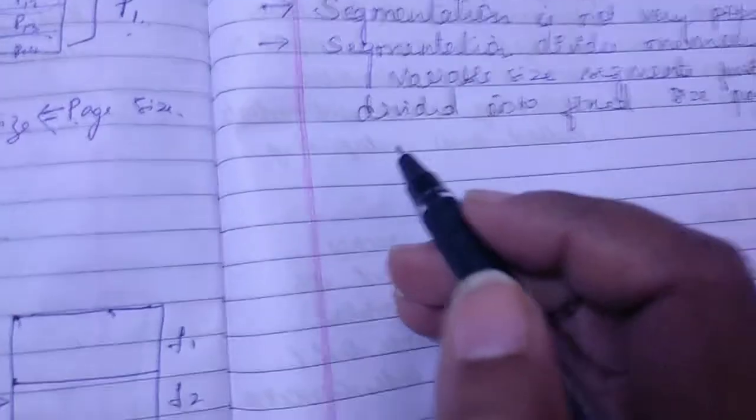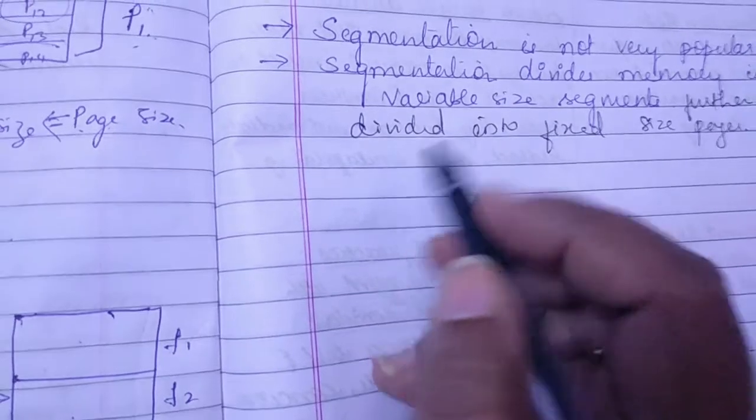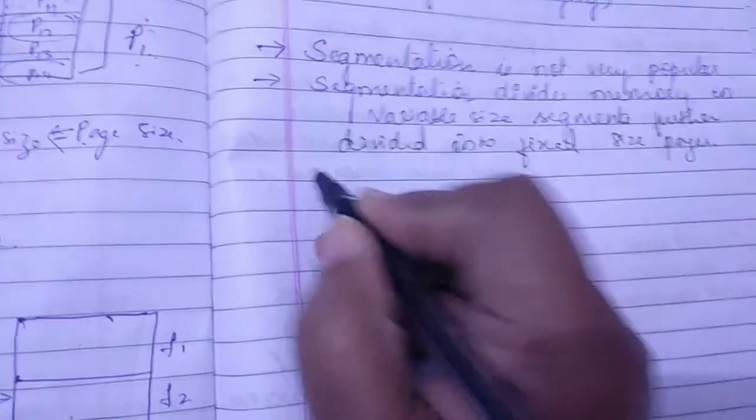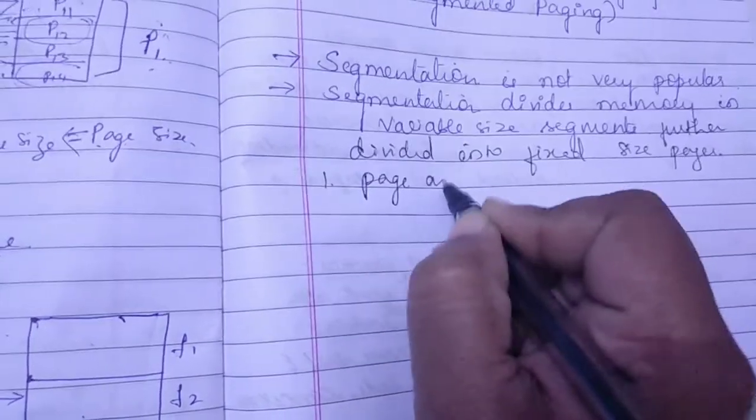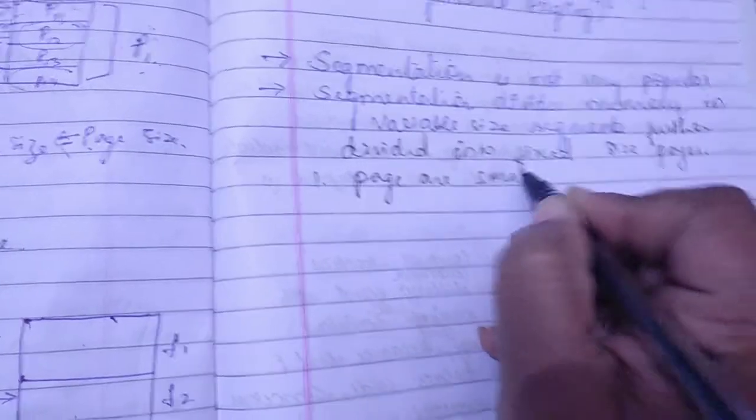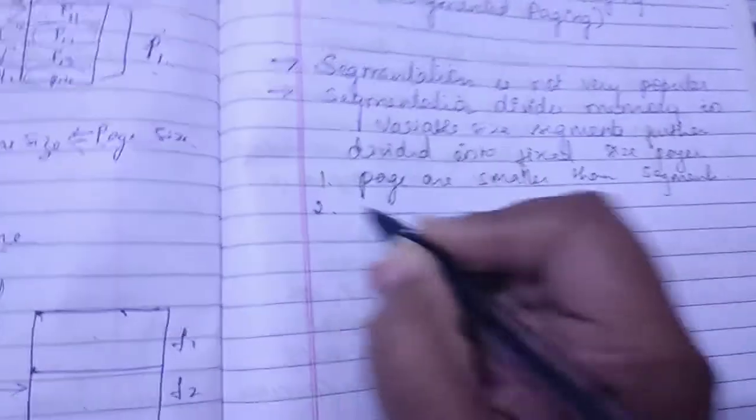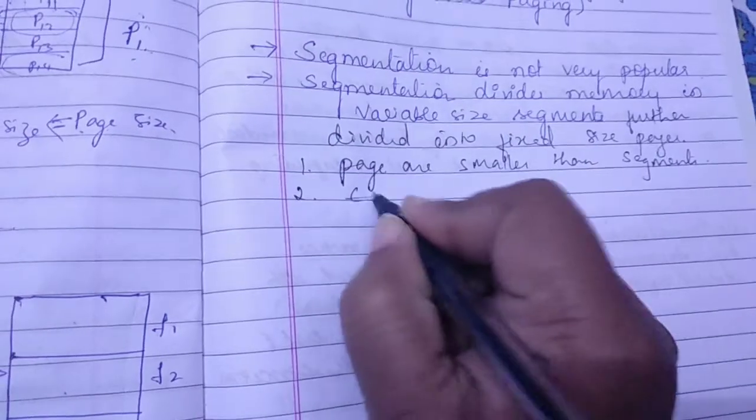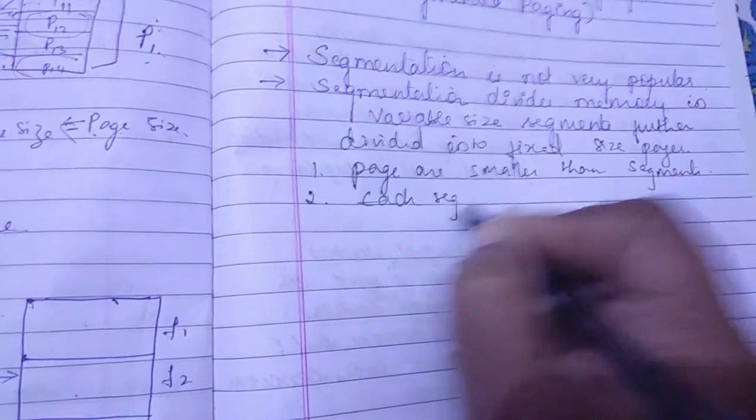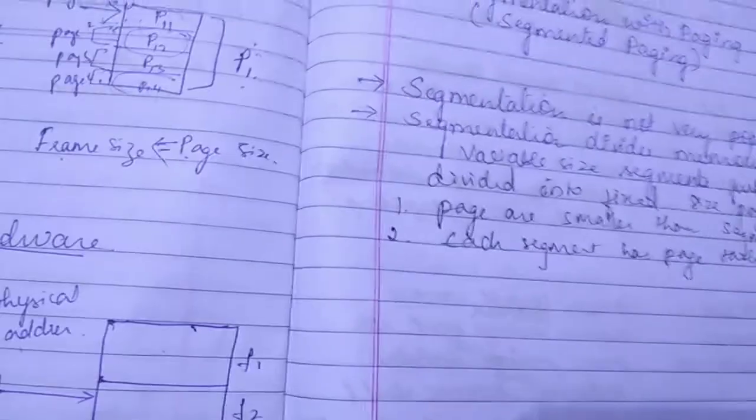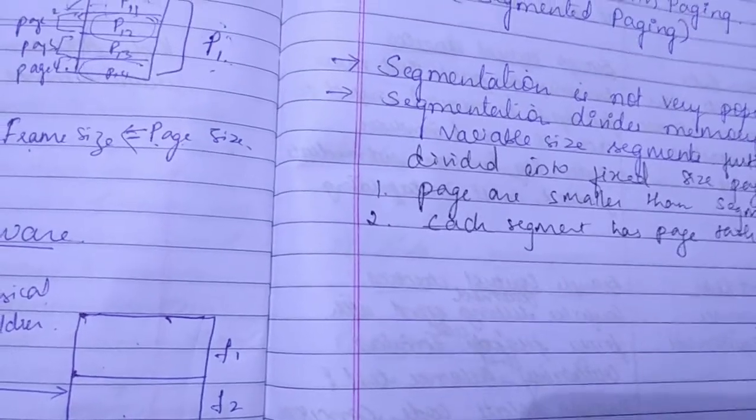And here, we need to notice or note some points which are very important in case of segmented paging. First one is pages are smaller than segments. These points we need to remember. And the next one is each segment has a page table.